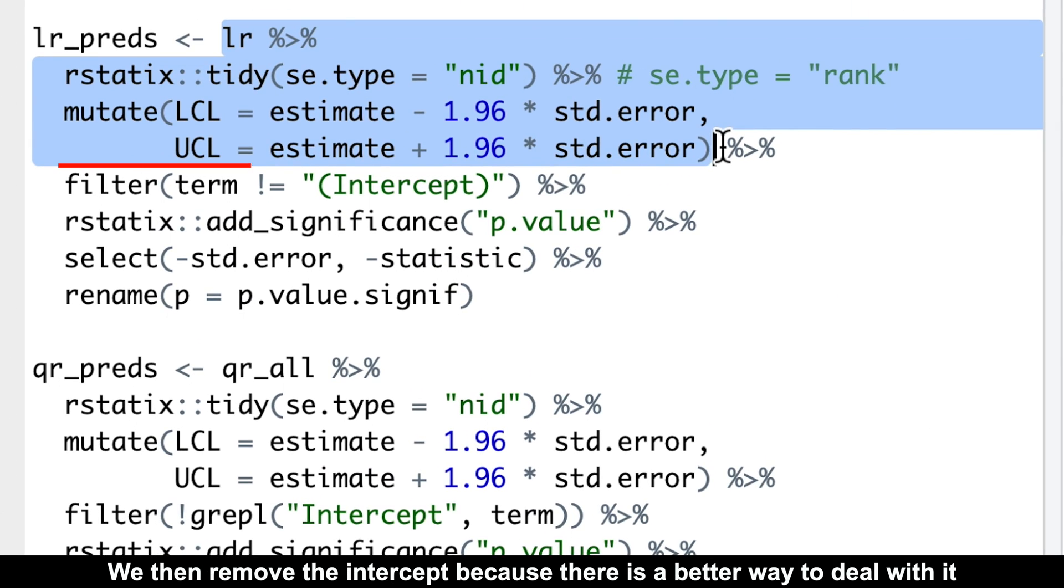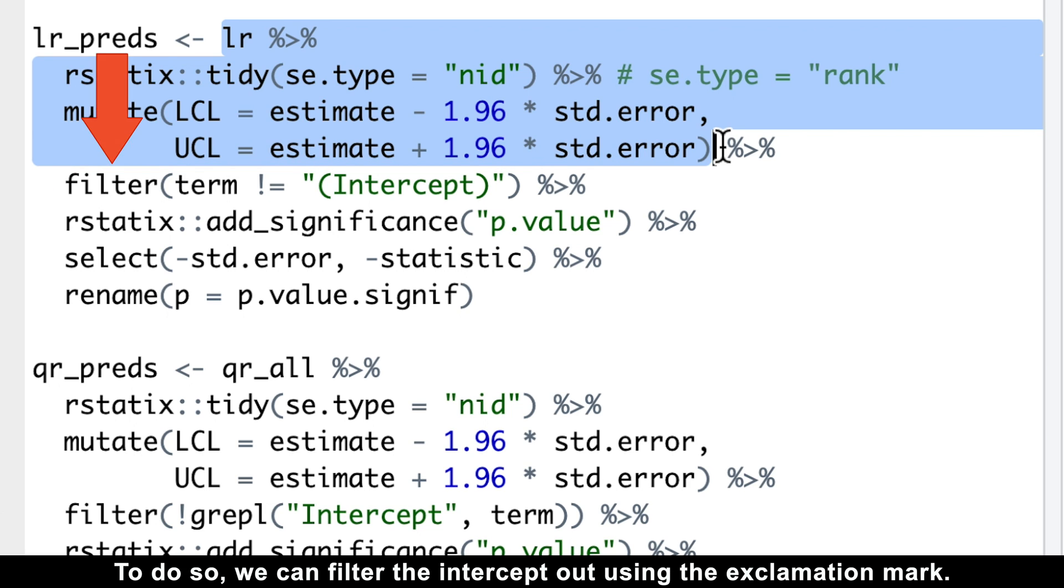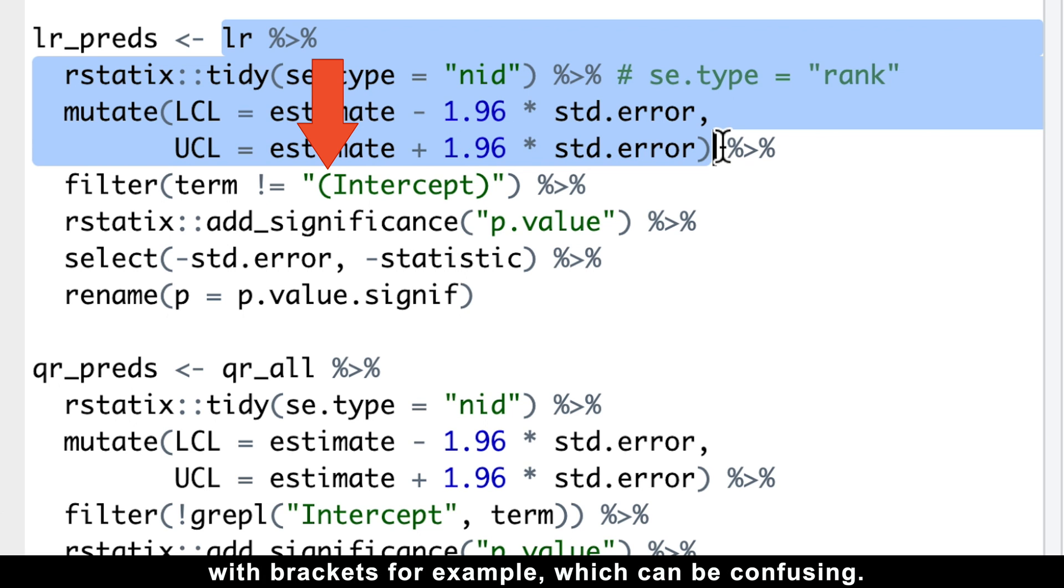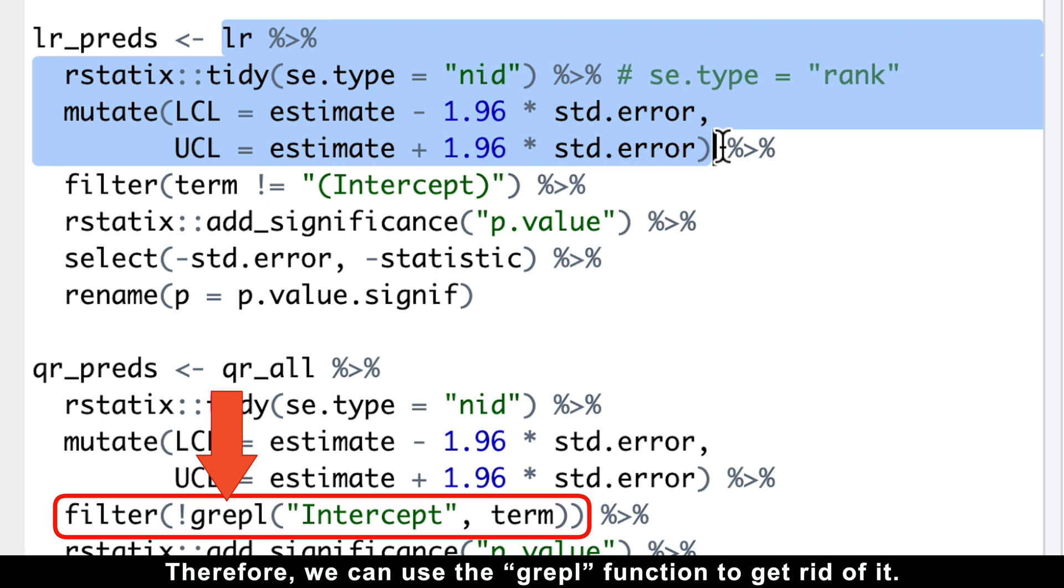We then remove the intercept because there is a better way to deal with it, and we'll come to it in a moment. To do so, we can filter the intercept out using the exclamation mark. However, intercepts are often written in a strange way, with brackets for example, which can be confusing. Therefore, we can use the grepl function to get rid of it.